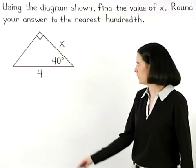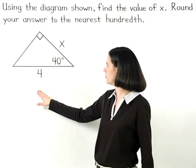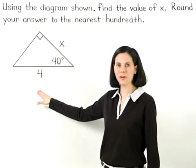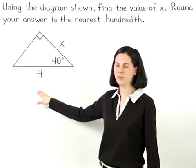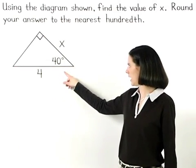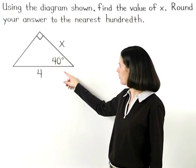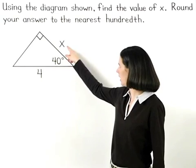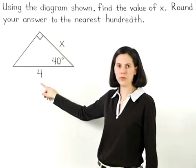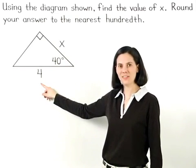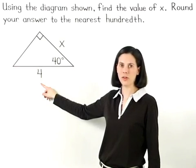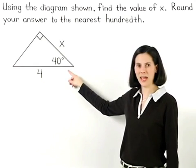Notice, however, that our right triangle is positioned differently than in the previous examples. We're given a 40-degree angle, but it's more difficult to determine if the sides with given lengths of x and 4 represent opposite, adjacent, or hypotenuse relative to our given angle.